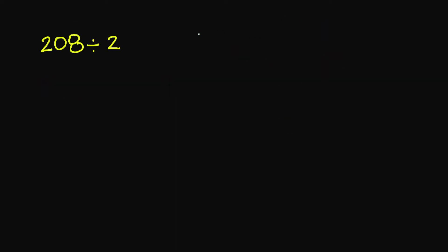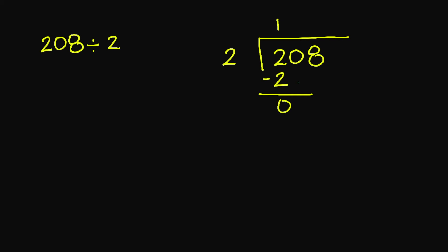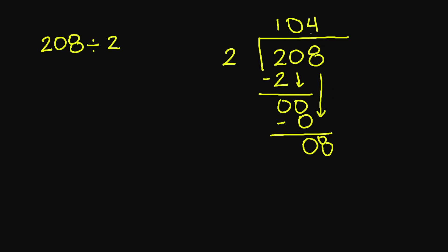Let's look at this example. Let's say we were dividing 208 divided by 2. I'm going to set up my division problem: 2 on the outside, 208 on the inside. 2 goes into 2 one time. 2 times 1 is 2. 2 minus 2 is 0. I'm going to bring down this 0. 2 goes into 0 zero times. 2 times 0 is 0. 0 minus 0 is 0. I'm going to bring down my 8. 2 goes into 8 four times. 2 times 4 is 8. 8 minus 8 is 0. So my quotient is 104.